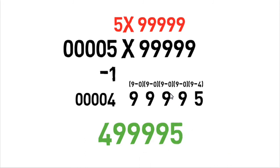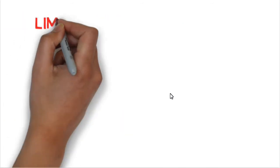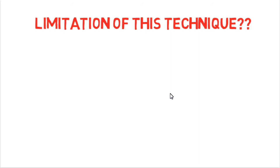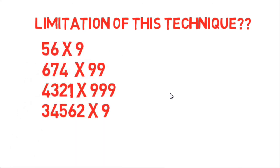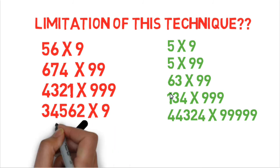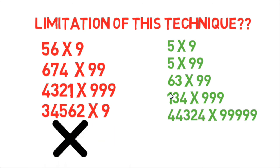So friends, it is a very simple technique but it has some limitations attached to it. This technique can only be applicable if the number of 9's or 9 digits are more than the multiplier on the left side. We will not be able to multiply in this way. The left side numbers will not get multiplied by this method.